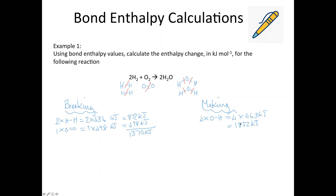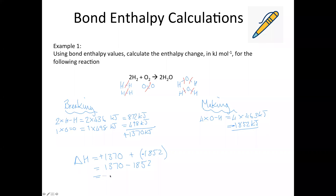So then if we put those in the calculator: for the hydrogen-to-hydrogen that comes out as 872 kilojoules, and 1 times 498 is just 498 kilojoules, and then we add those up to get 1,370. For the bond making, 4 times 463 comes out as 1,852. So the overall enthalpy change is the endothermic bond breaking — plus 1,370 — add the exothermic bond making — negative 1,852 — which equates to 1,370 minus 1,852. Put that in your calculator and you get negative 482 kilojoules. Just make sure if you get a negative value you put a minus; if not, remember to put a plus in front.